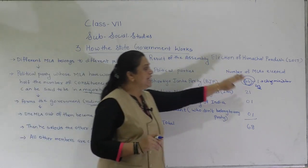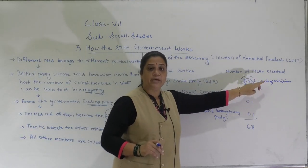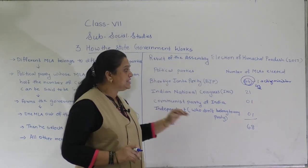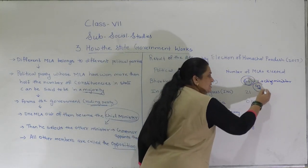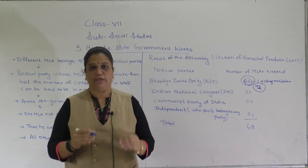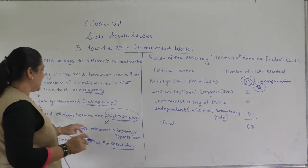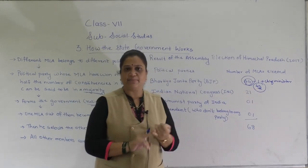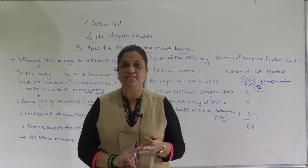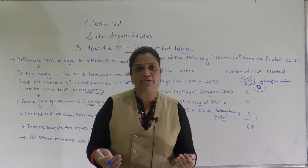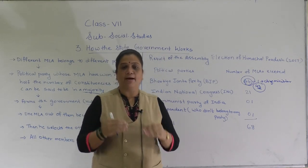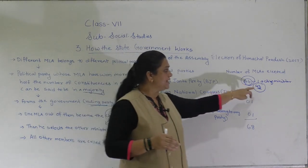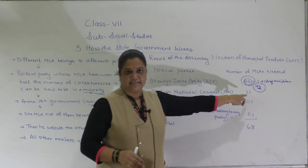Now the Chief Minister selects the other ministers from these remaining 43 MLAs. For example, from these 43 MLAs, the health minister, the education minister, and so many other ministers who work under the Chief Minister are selected by the Chief Minister.